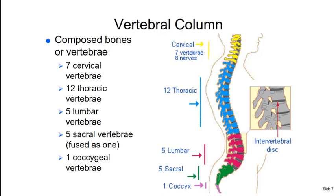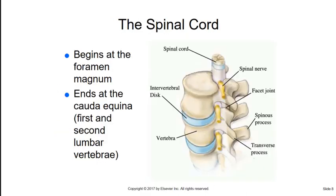The vertebral column provides structure and protects the spinal cord. It is composed of 24 bones or vertebrae, in addition to the sacrum and coccyx: seven cervical vertebrae, twelve thoracic vertebrae, five lumbar vertebrae, five sacral vertebrae (fused), and the coccyx (one to three bones, also fused). The spinal cord is located within the vertebral canal, is continuous with the medulla oblongata, originates at the foramen magnum — the large opening at the base of the skull — and terminates in the cauda equina at the first and second lumbar vertebrae.